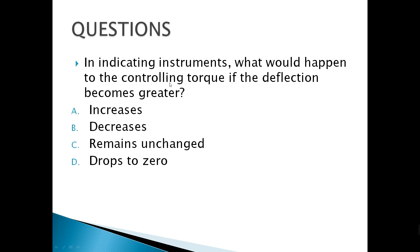In indicating instruments, what would happen to the controlling torque if the deflection becomes greater? It increases. The controlling torque is the one which opposes the deflection, therefore it will increase if the deflection becomes greater.